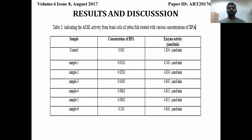Table 2 indicates acetylcholinesterase activity from the brain cells of zebrafish treated with various concentrations of bisphenol A, recorded after the titration process. The control showed 1.834 micromoles per minute of acetylcholine. Sample one showed 4.543 micromoles per minute, indicating a drastic increase in acetylcholinesterase activity. By sample six, activity reached 4.843 micromoles per minute, showing the acetylcholinesterase activity was drastically very high.